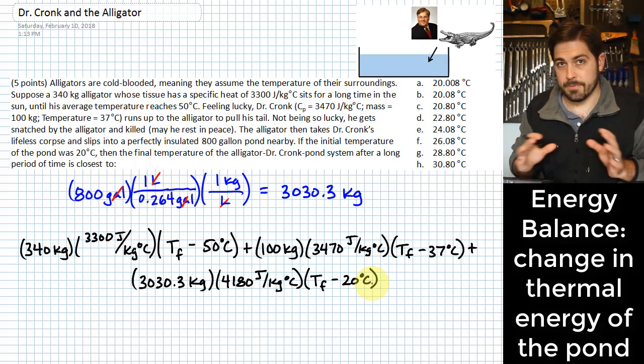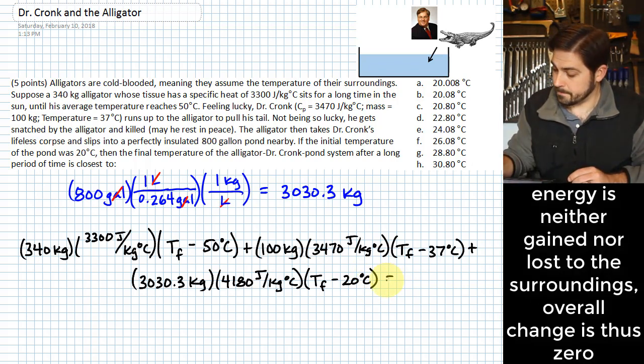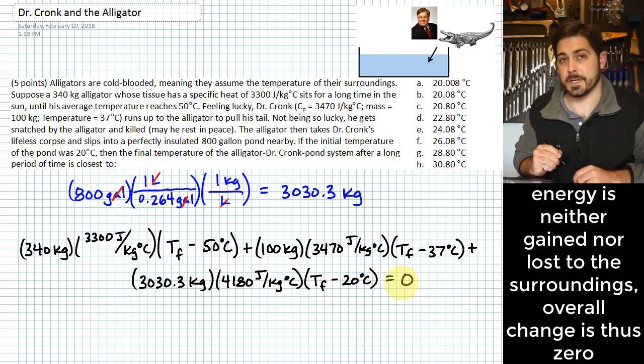Now we've accounted for everything that's in this pond Dr. Kronk alligator system. And we can set it equal to zero.